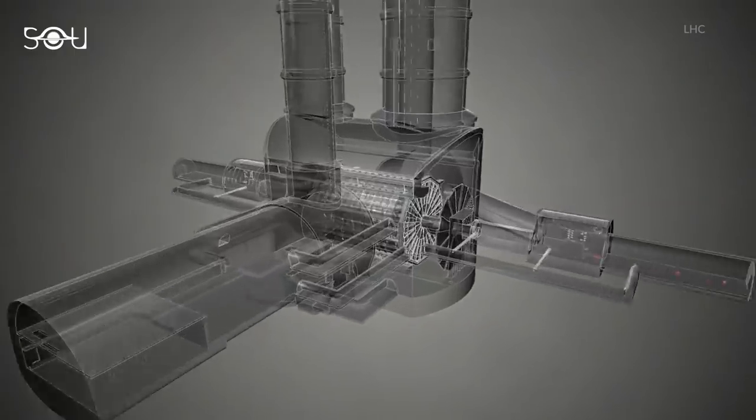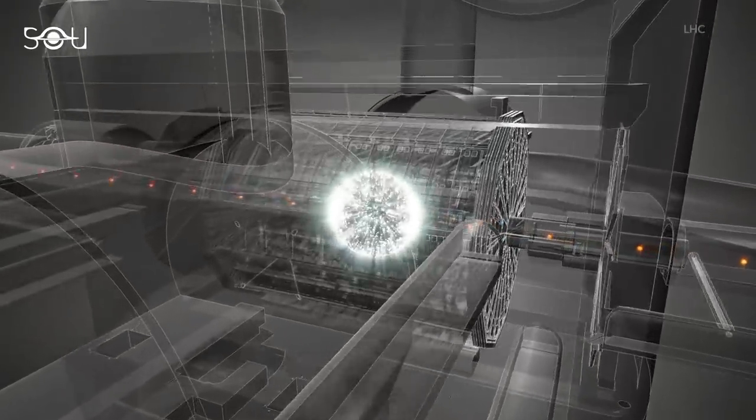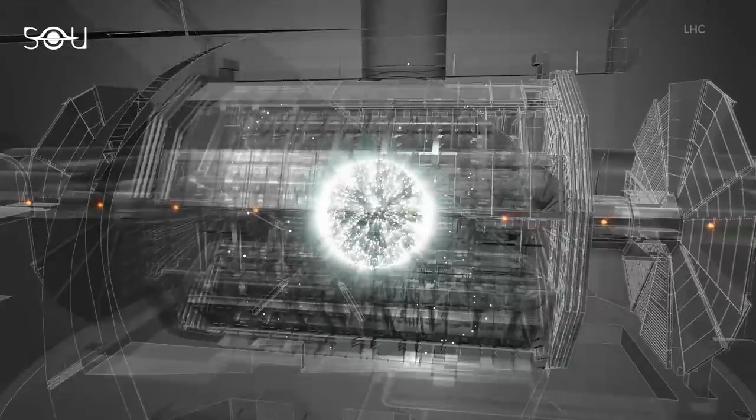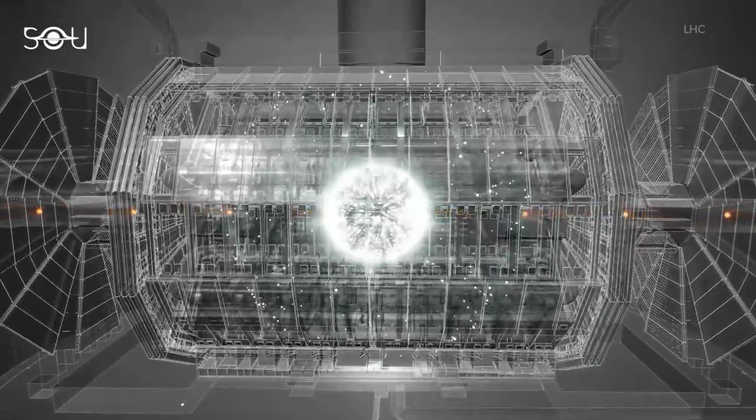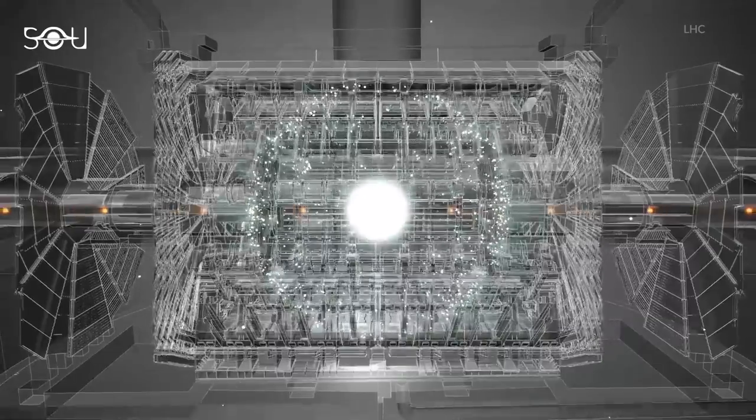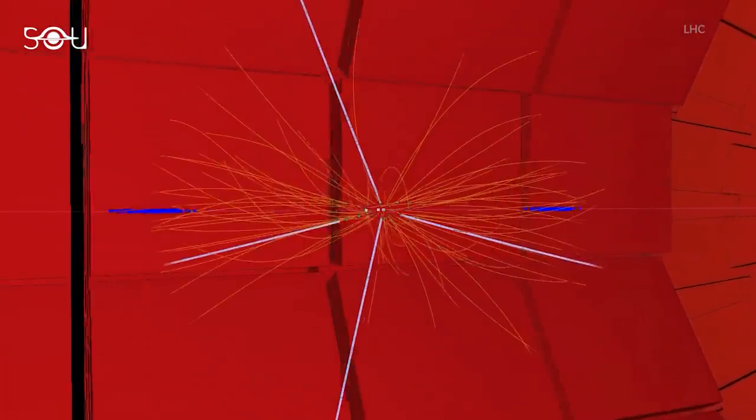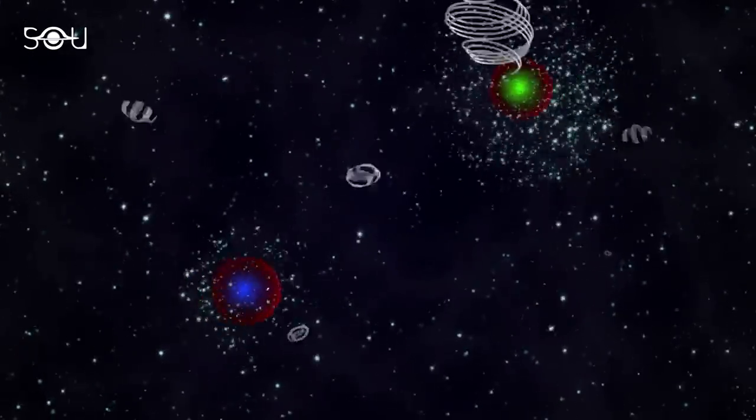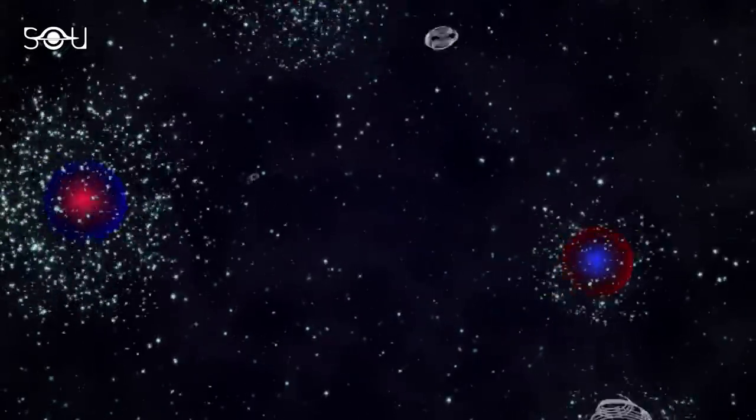So instead of accelerating energetic photons directly, the researchers sped up two positively charged ions in a big loop and then they sent them past each other in a near collision. These ions are charged particles that move very close to the speed of light. This means that each of them also carries an electromagnetic field associated with them.